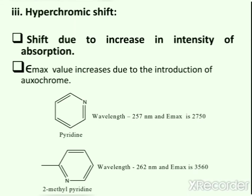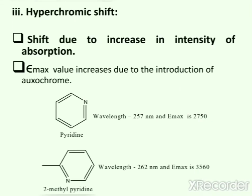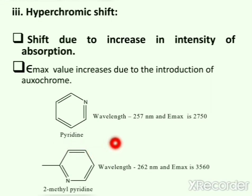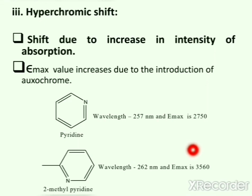Next is hyperchromic effect. Hyperchromic effect is a shift due to increase in intensity of absorption, where the Emax value increases due to the introduction of an auxochrome. In this example, pyridine has an absorption wavelength at 257 nm and an Emax value of 2750. Introduction of one CH3 group into the pyridine structure generates its derivative 2-methylpyridine, and because of this, the absorption wavelength shifts to 262 nm and the Emax value shifts to 3560.